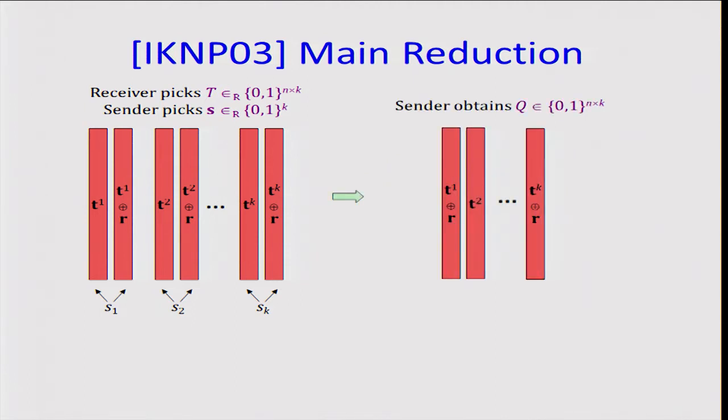Then the sender will actually choose one out of these two columns using his random row selection vector. The sender obtains a matrix Q as the output of this OT protocol. Let's look at how the row of this matrix Q looks like. When RI equals zero, QI will equal TI. And when RI equals one, in each pair, the bits will be different. So in this case, QI will equal TI XOR S.